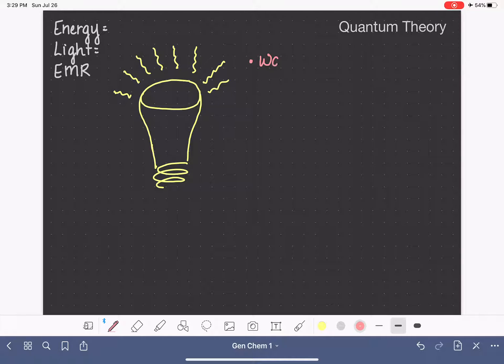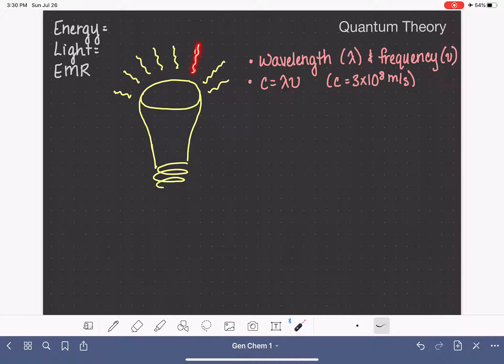And there's a few things that we know about the energy or the light that is being emitted from this light bulb. First of all, we know that this light has a wavelength, which we abbreviate lambda, and we know that this light has a frequency, which we abbreviate with the Greek letter nu. I talked about wavelength and frequency in the previous video. We know that the wavelength times the frequency of this light is going to be equal to the speed of light, C, which is 3 times 10 to the 8th meters per second.